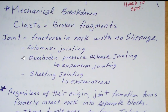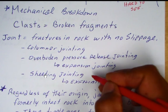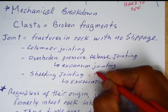We've already talked about columnar jointing. Other types of jointing could be where there's overburden pressure. To make these rocks you've got to bury them, compact them, and cement them — so they're under pressure. When you expose these rocks to the surface they're going to expand, and you get expansion jointing or pressure release jointing. Sheeting joints are the same idea, and are especially common to granitic rocks.